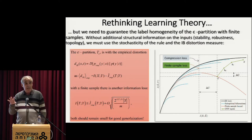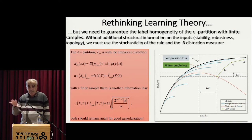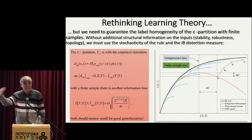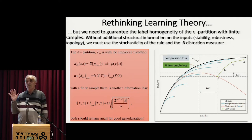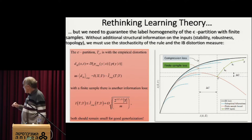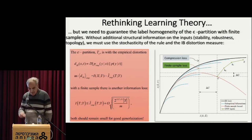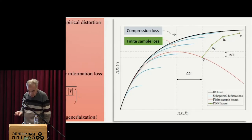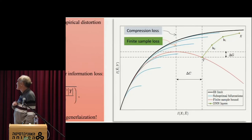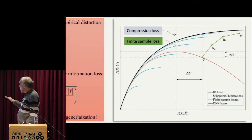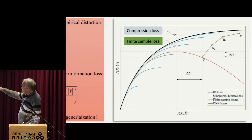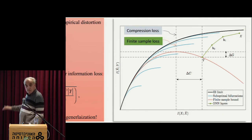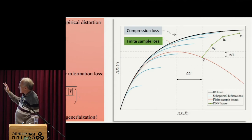So the question is how well I can estimate this value of information. How well I generalize if I actually do the same type of dynamics using a sample. This is work that goes all the way to 2008 with Shamir and Ohad Shamir and Sivan Sabato, which is essentially calculating this red curve.